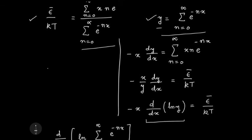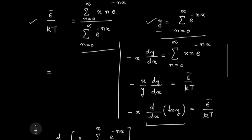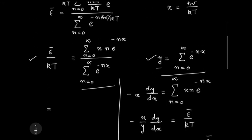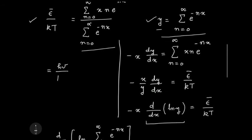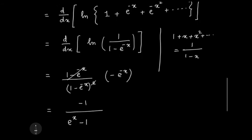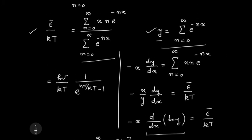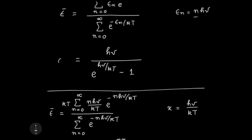So I can now start writing down what is my epsilon bar by kT. It is minus x, so minus x is nothing but—x is nothing but h nu by kT, so this is h nu by kT. And this quantity I have calculated with a minus sign, so that minus cancels. What I am left with is one by e to the x minus one, which is one by e to the h nu by kT minus one. So epsilon bar, you see, is h nu by e to the h nu by kT minus one, which is what I have here.